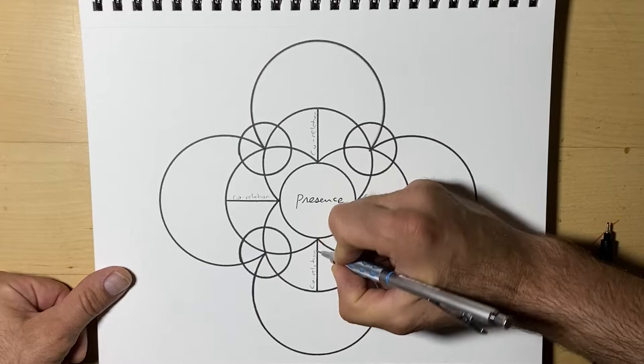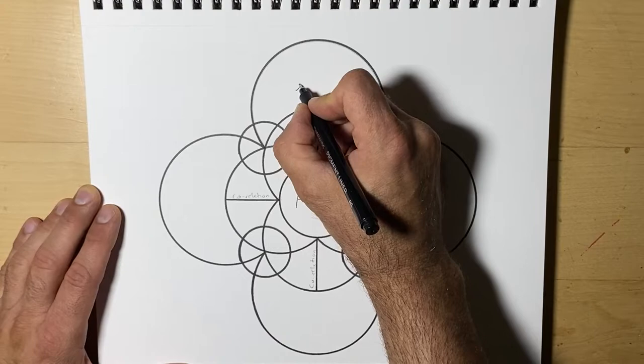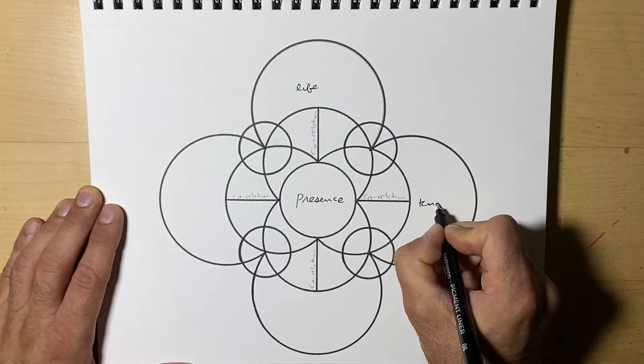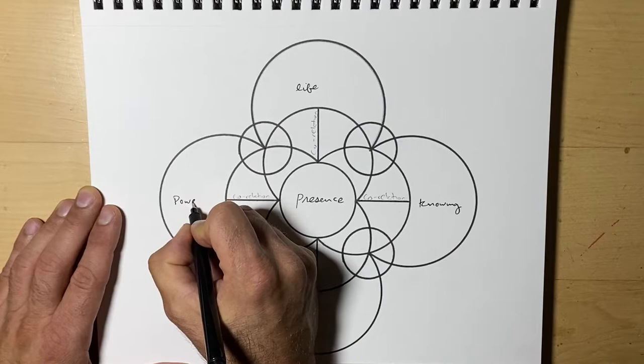Then on the outer boxes, up here you have Life, here you have Knowing, on the left we have Power, and on the bottom we have Wanting.